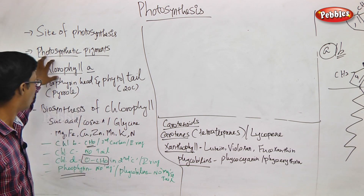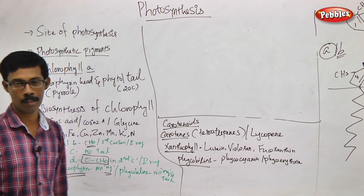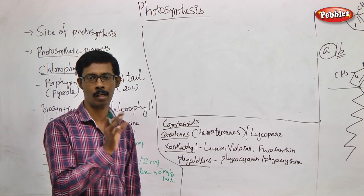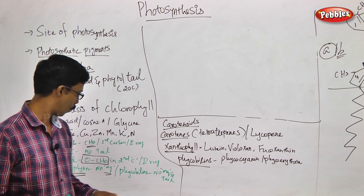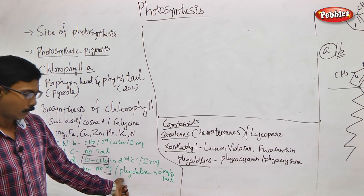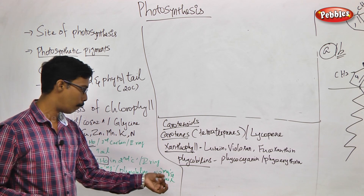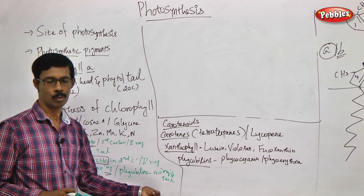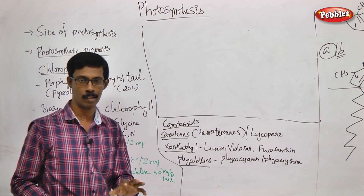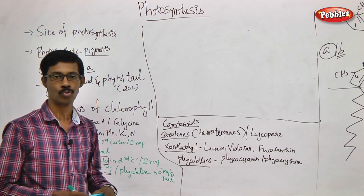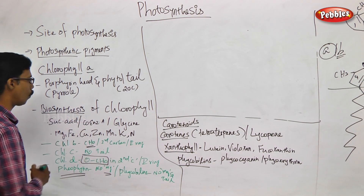Comparing with Pheophytin: the major difference is the absence of the magnesium ion. No magnesium is present in Pheophytin; instead, two hydrogen atoms replace the magnesium, while the tail remains the same. Phycobilin is a unique pigment - it lacks the entire tail structure. This is the comparison of these pigments with Chlorophyll A.